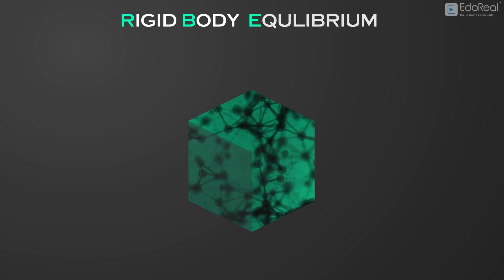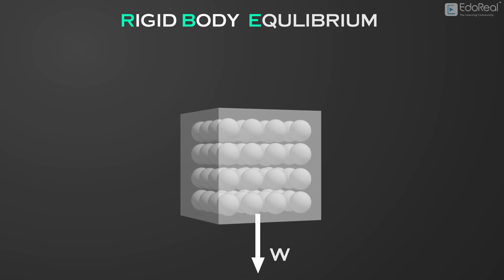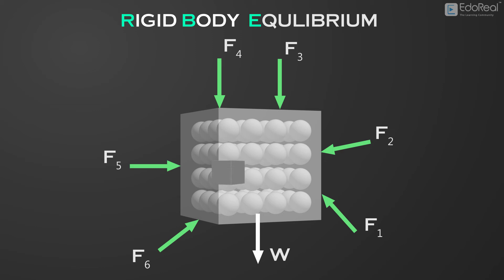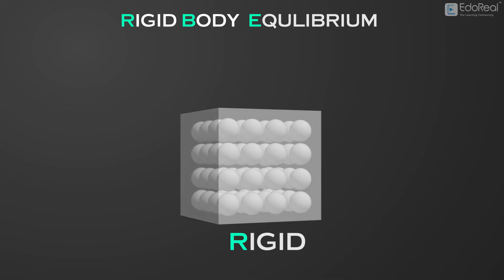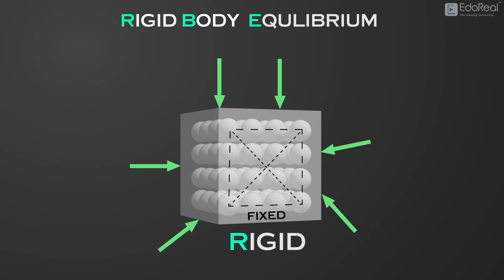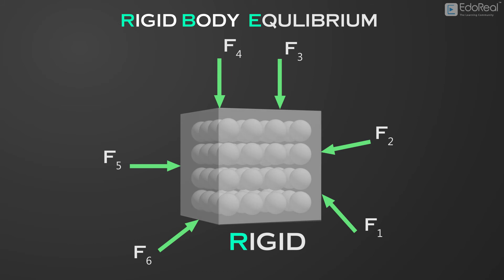Rigid body equilibrium. A body is formed by a group of particles. The size of a body affects the results of any mechanical analysis on it. A body is said to be rigid when the relative positions of its particles are always fixed and do not change when the body is acted upon by any load. A rigid body is said to be in equilibrium if all the particles that make the body are in equilibrium.